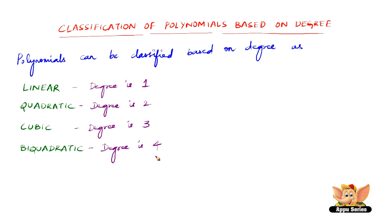Looking at an example each for Linear, Quadratic, Cubic, and Biquadratic. For Linear, x plus 1 is an example, because the expression x plus 1 has a degree of 1. An example for Quadratic can be x squared plus x plus 1, because the degree of x squared plus x plus 1 is 2.